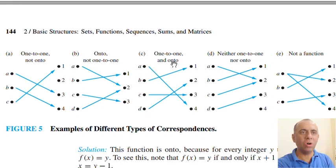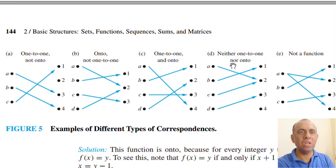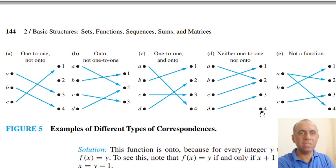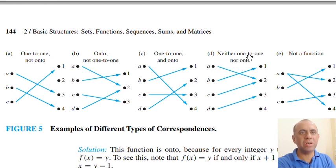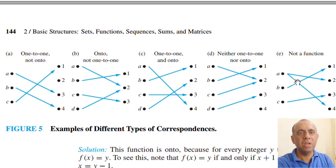In the fourth example, A maps to 4, B maps to 1, C maps to 3, D maps to 2 — one-to-one and onto. The fifth example is neither one-to-one nor onto: element 4 in the codomain is left out, making it not onto, and two input elements map to the same output, making it not one-to-one. This function is still a valid function, just neither injective nor surjective.